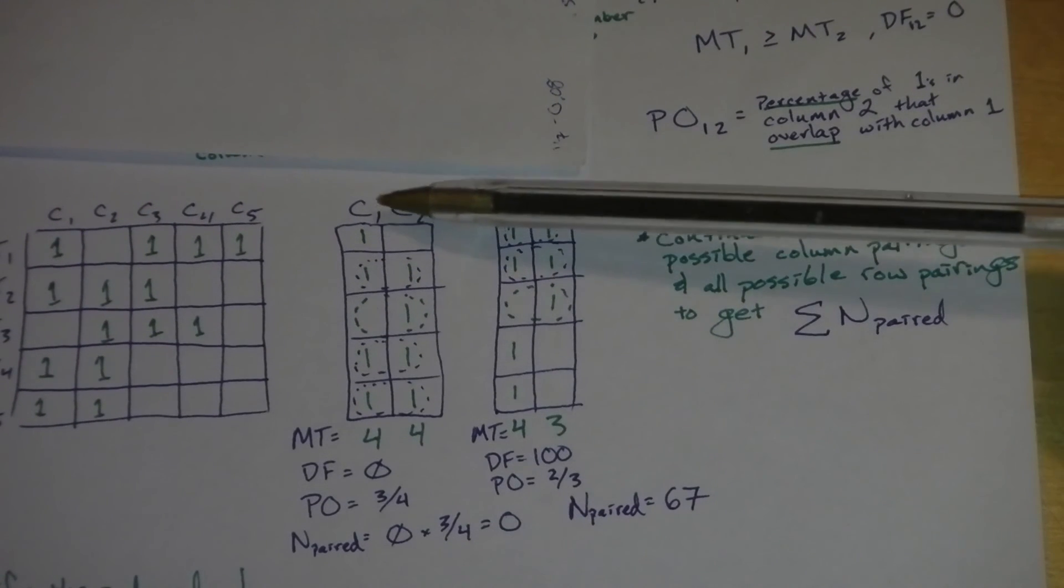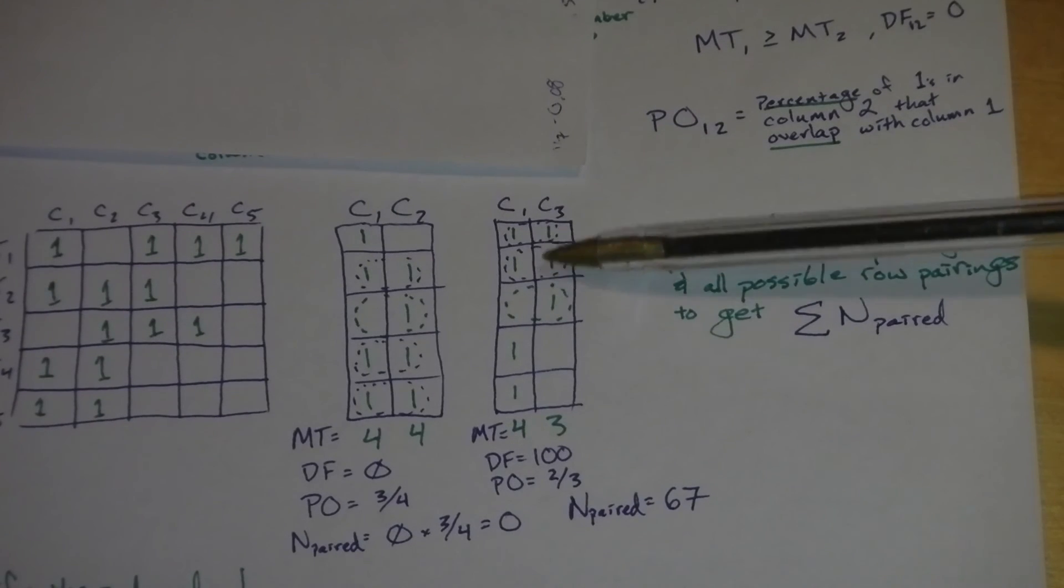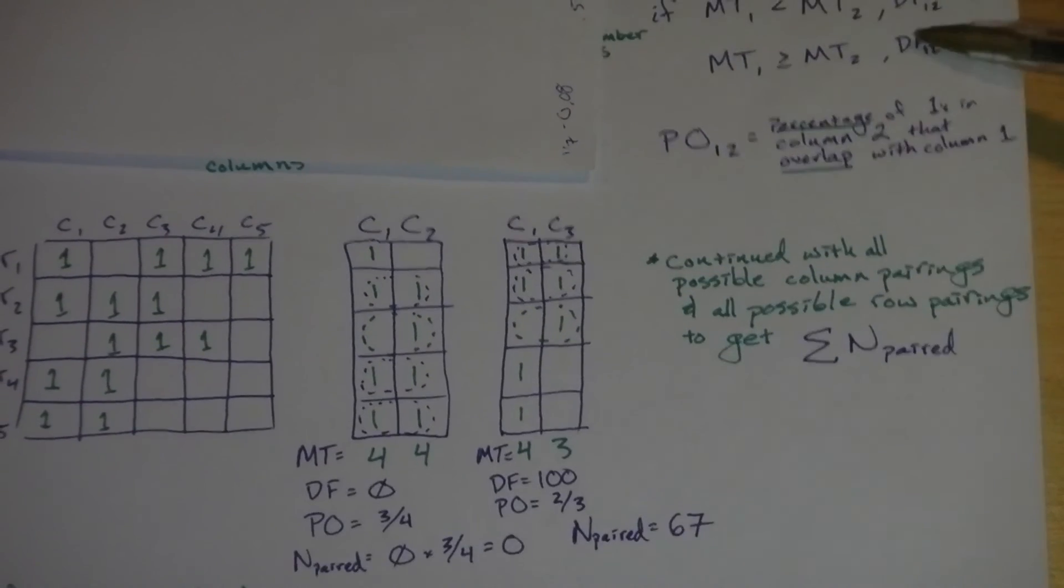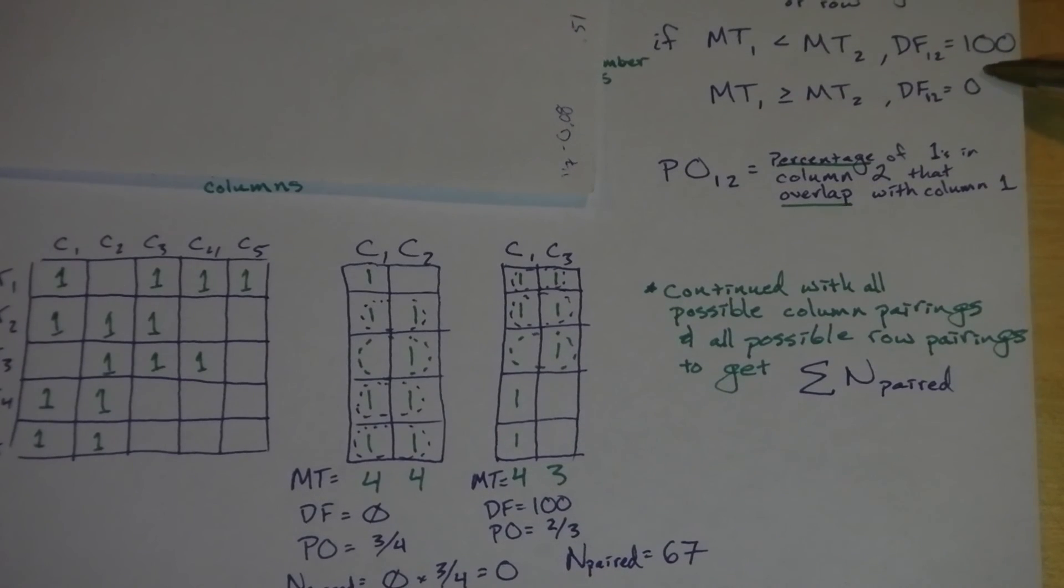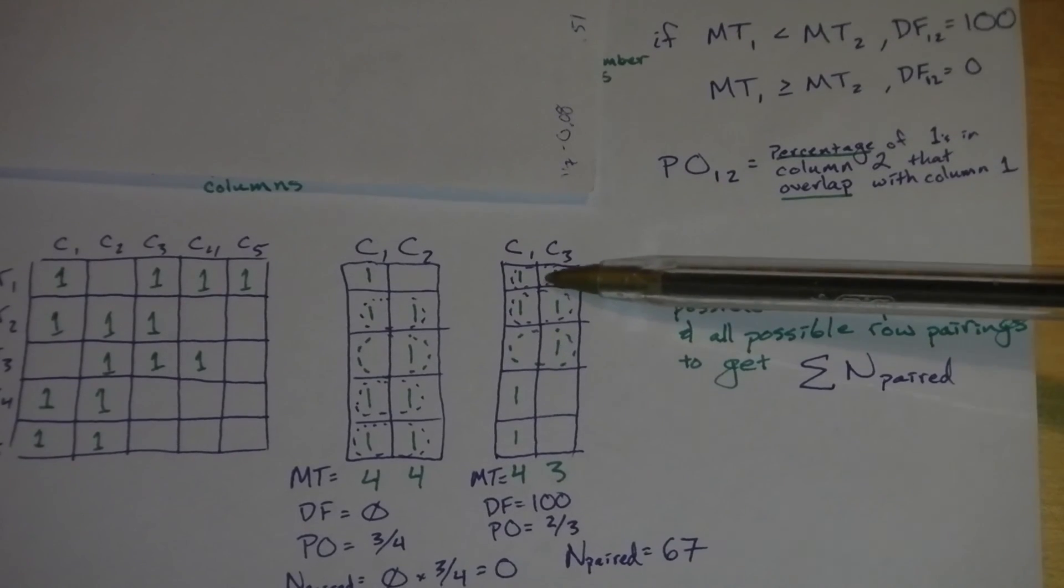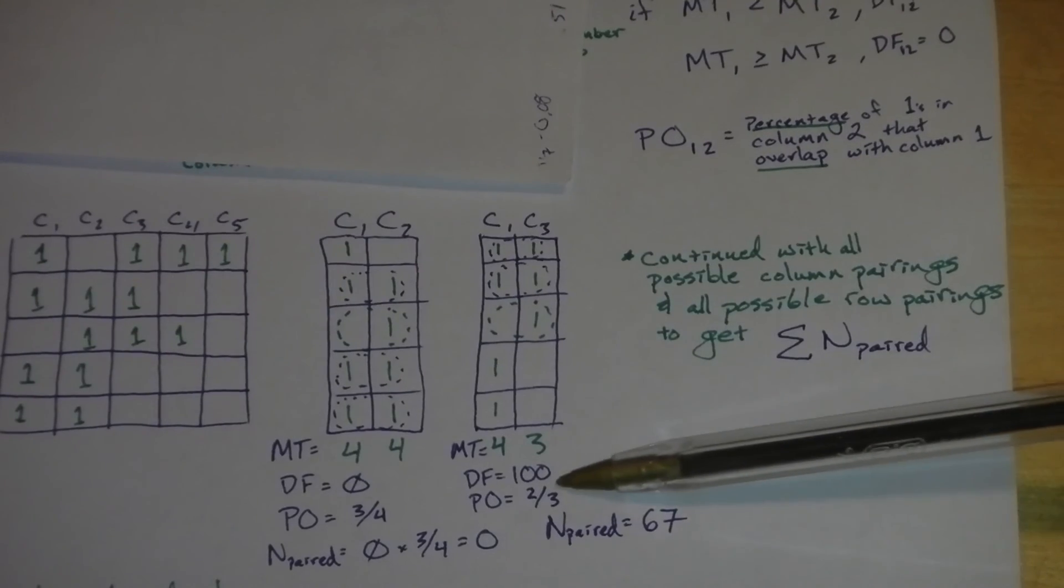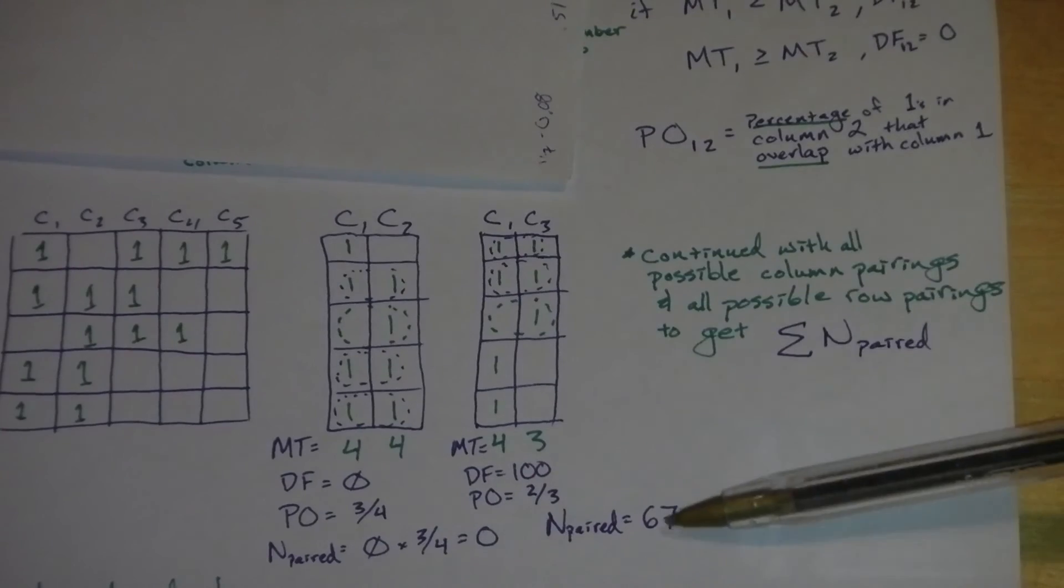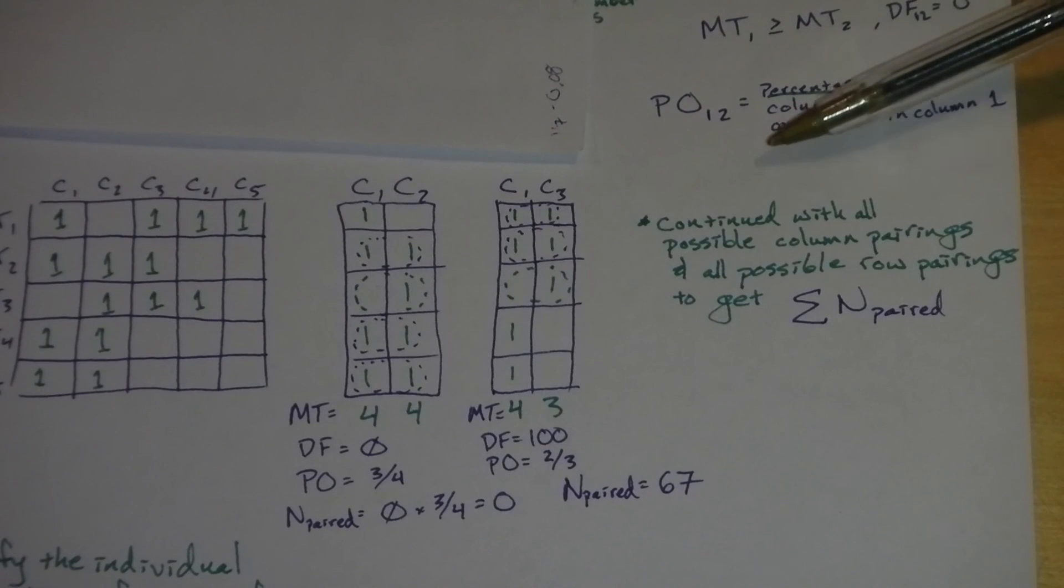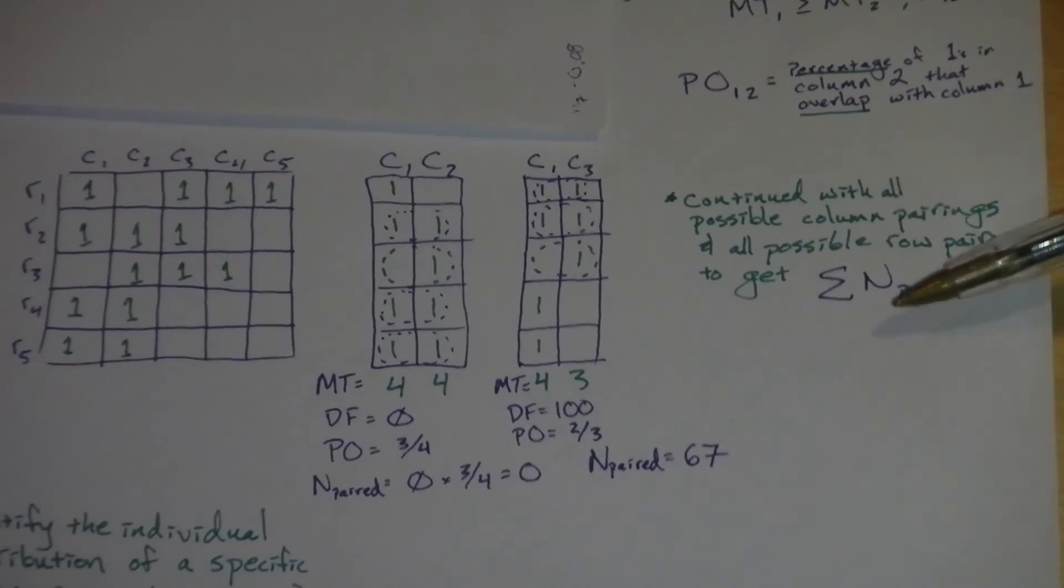Now we just continue down the line, so comparing column one to column three. In this case, the marginal total is four in column one, and it's only three in column three. So now our decreasing fill value is equal to 100, so we've got to look at the percentage overlap between these two columns. And we can see out of three possible interactions where they could overlap, two of them overlap. So we get a value of two thirds, and that gives us an N paired value for this one of 67. And essentially what we do is we continue with all possible column pairings and all possible row pairings to get our summed value of N paired.